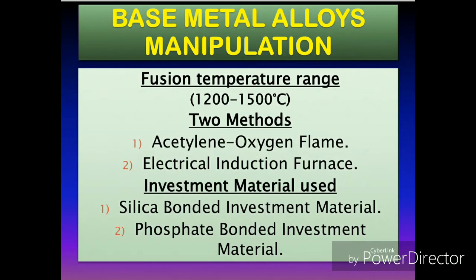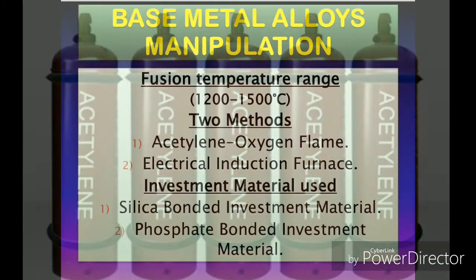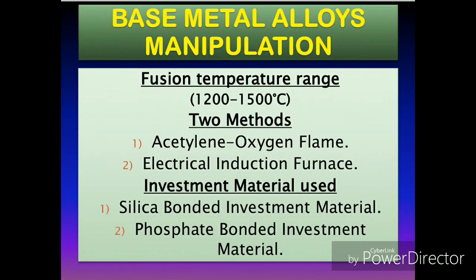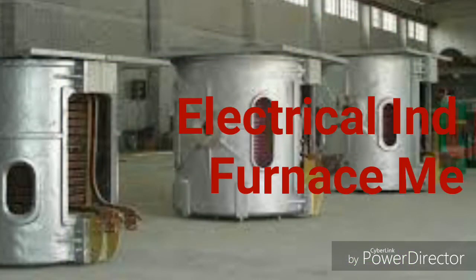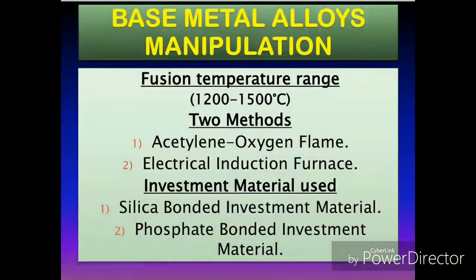In the case of excess acetylene, it may cause metal carbide formation leading to embrittlement of the alloy. That is why the electrical induction furnace method is more preferred because of more controlled conditions. The investment material used for base metal casting alloys must be capable of maintaining its integrity at such high casting temperatures.